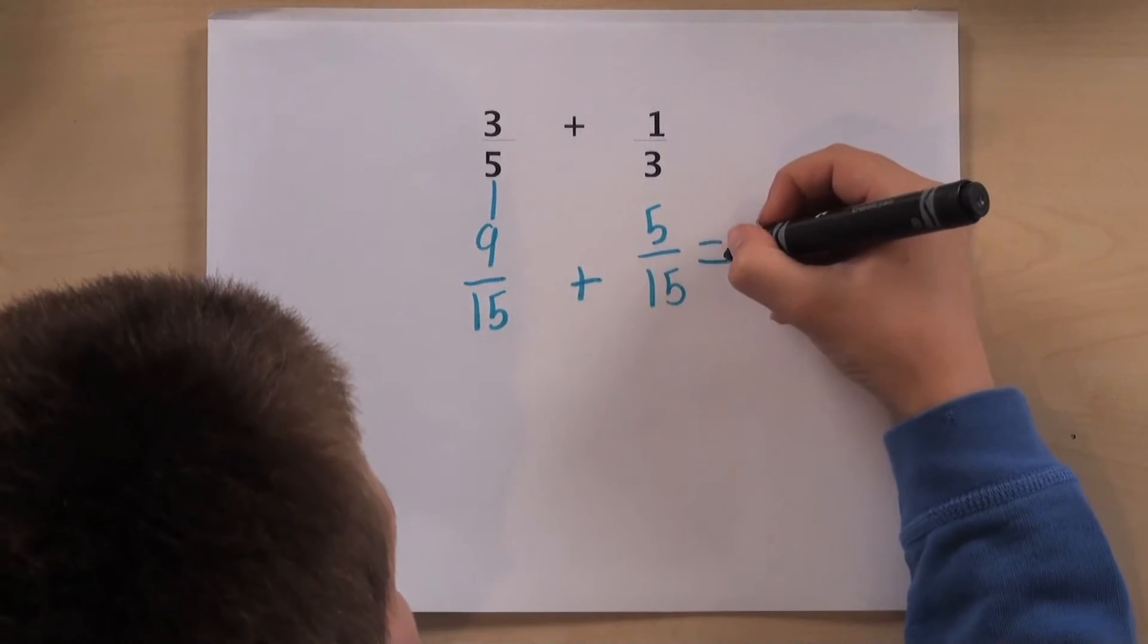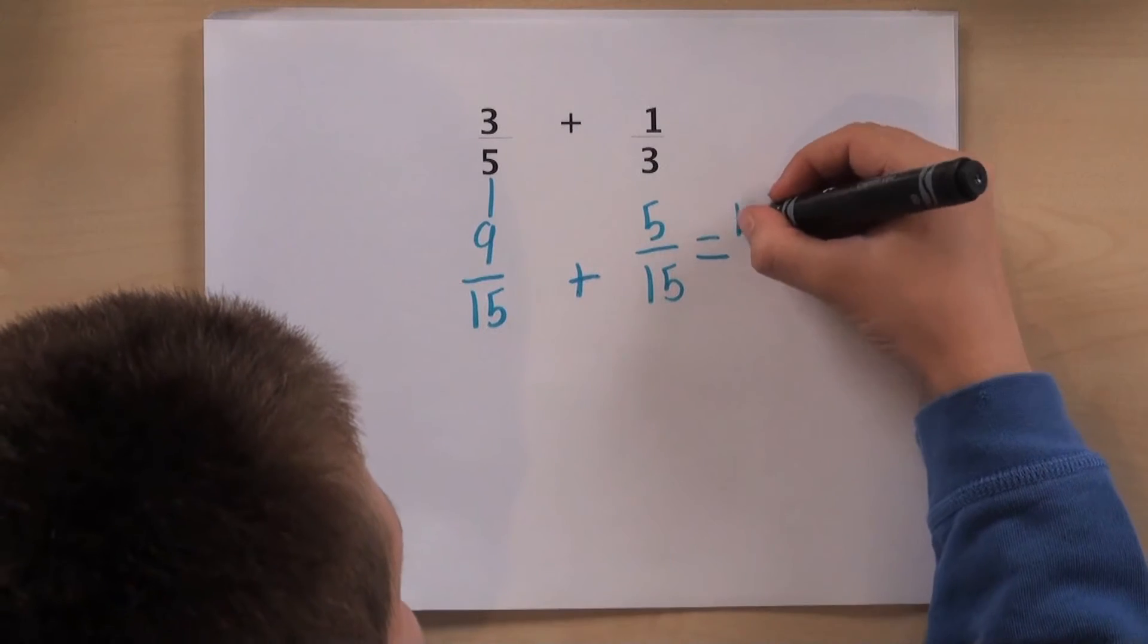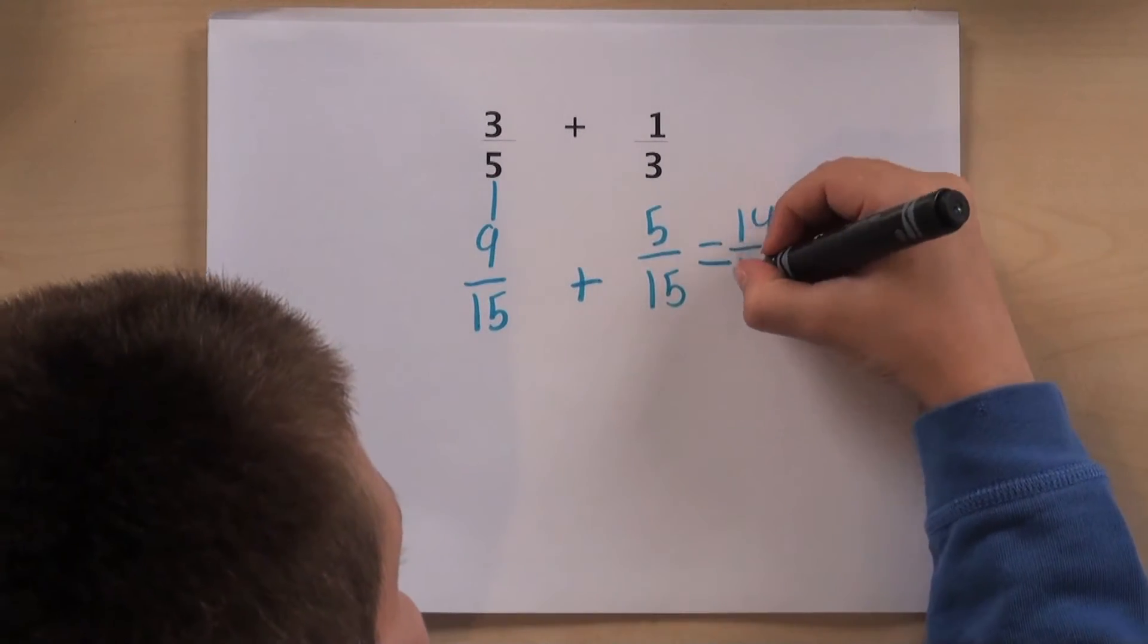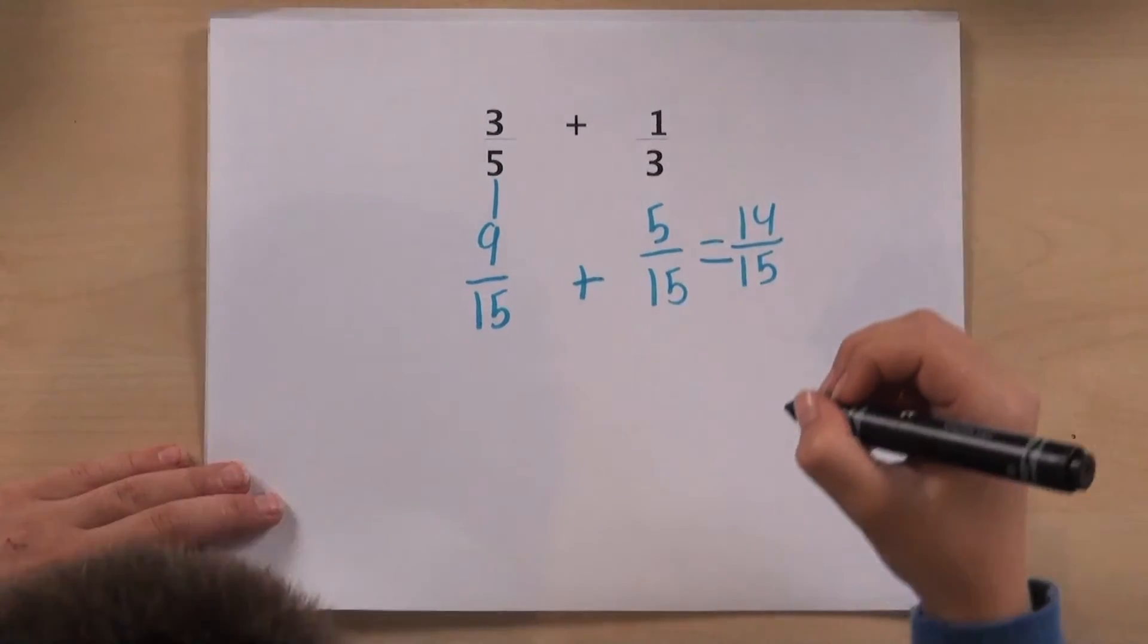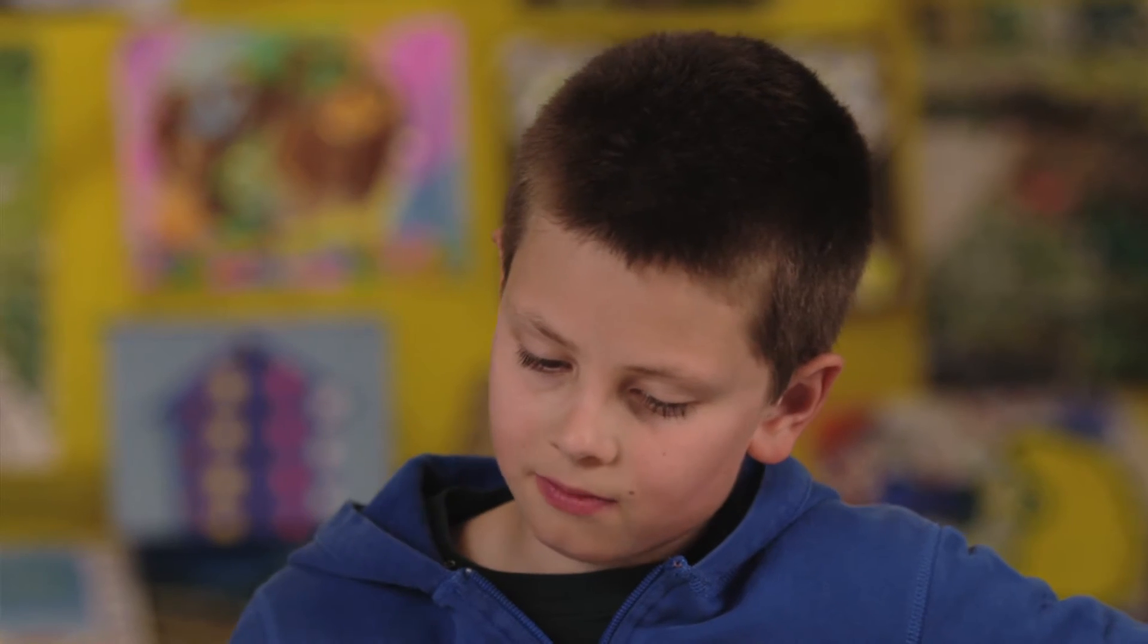I knew that 5 times 3 is 15, so I used 15 as my common denominator, and then I got 14/15.